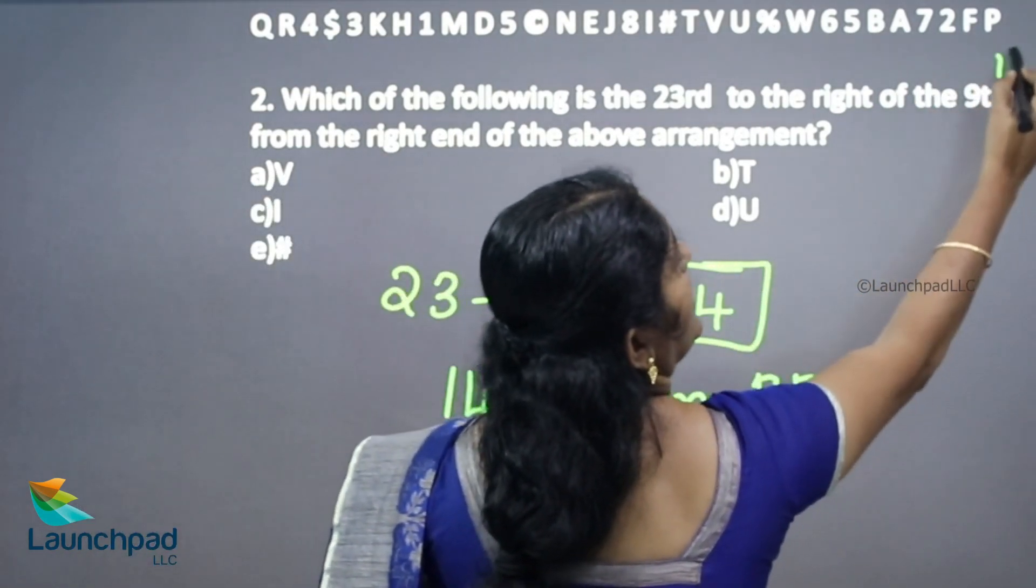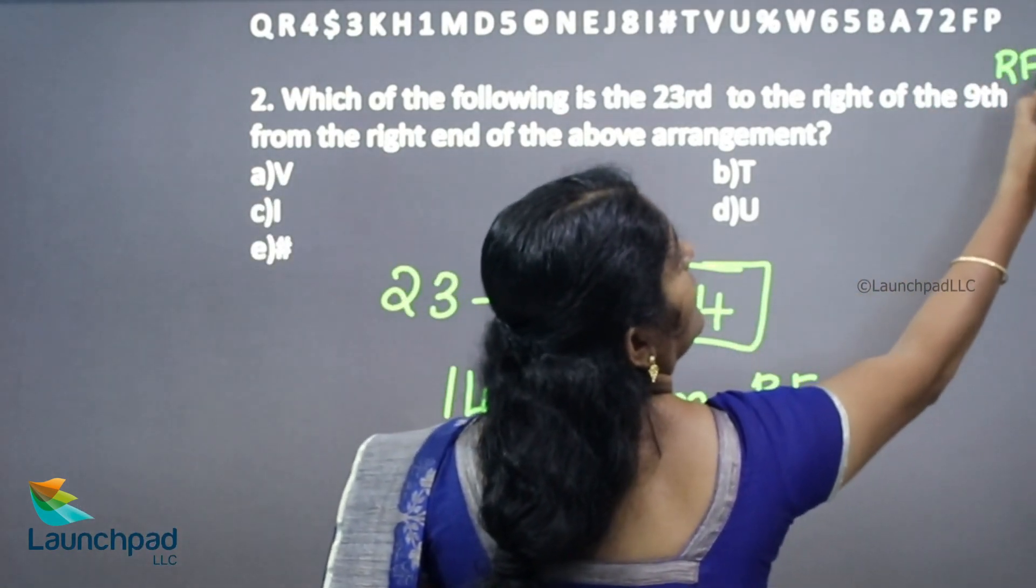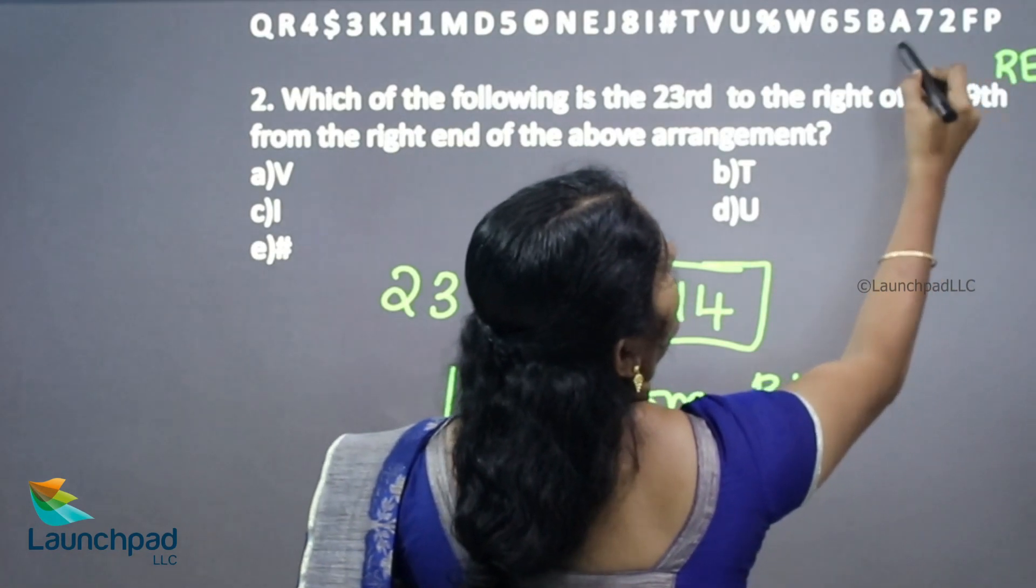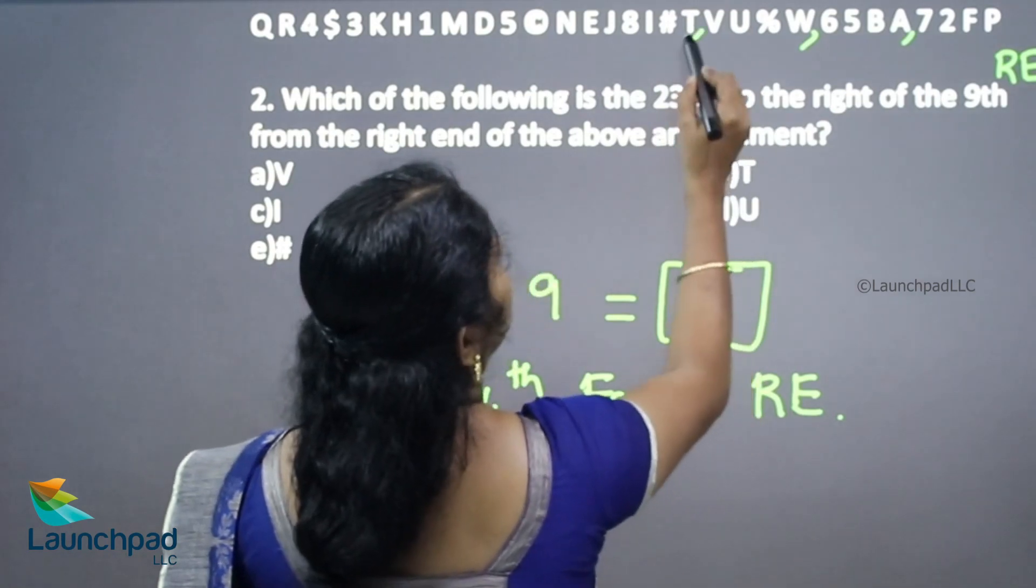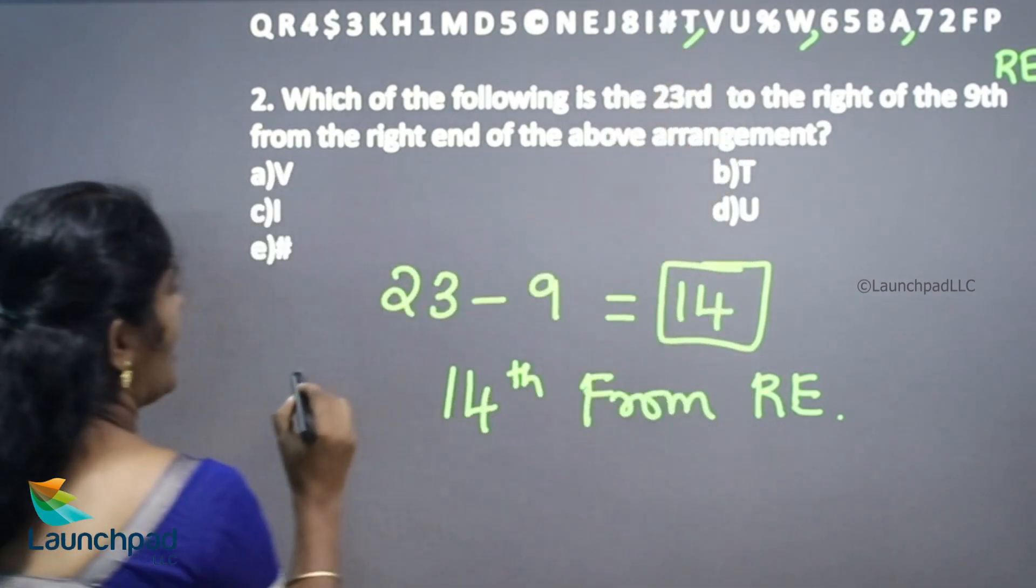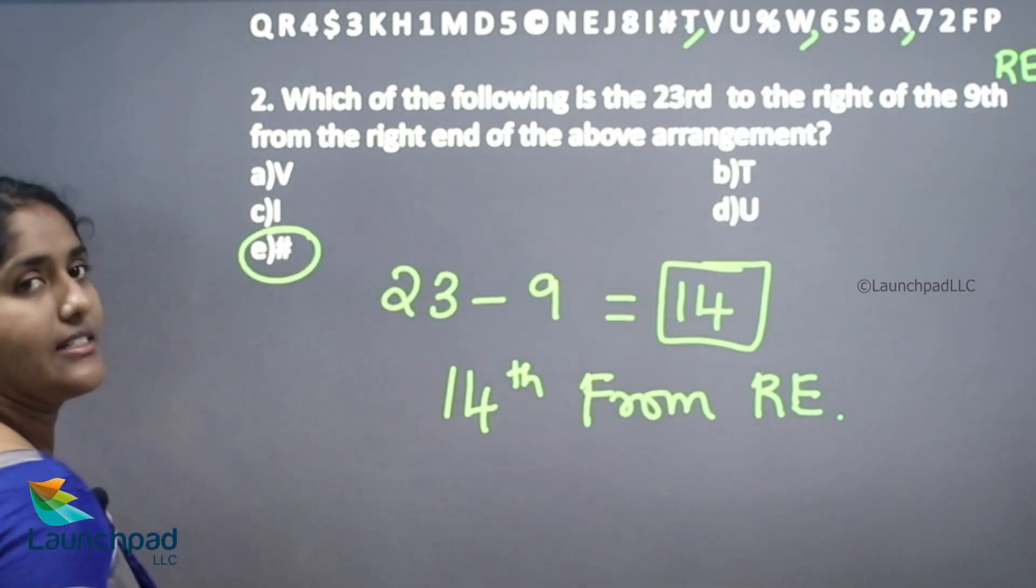This is your right end. 4, 8, 12, 13, 14. Ash is your answer.